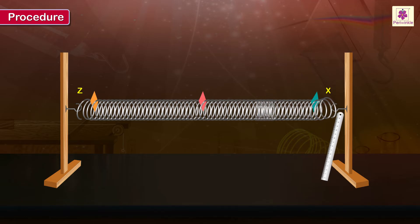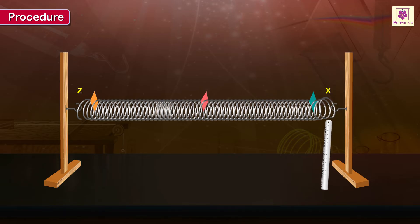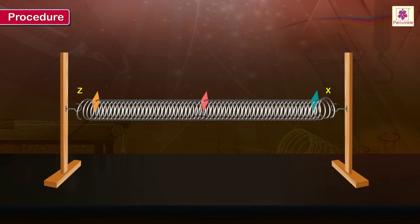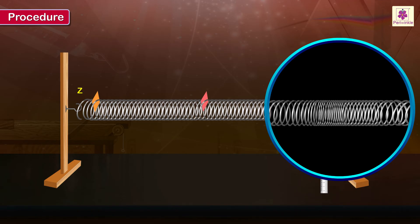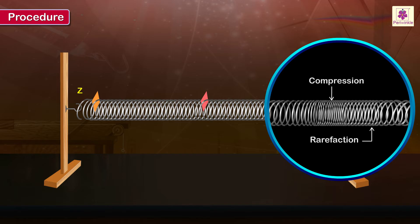Also observe the to and fro movements of the bits of paper, i.e. turns of the slinky, in a direction parallel to the stretched slinky. Watch how the plucking produces alternate regions of compressions and rarefactions in the turns of the slinky.